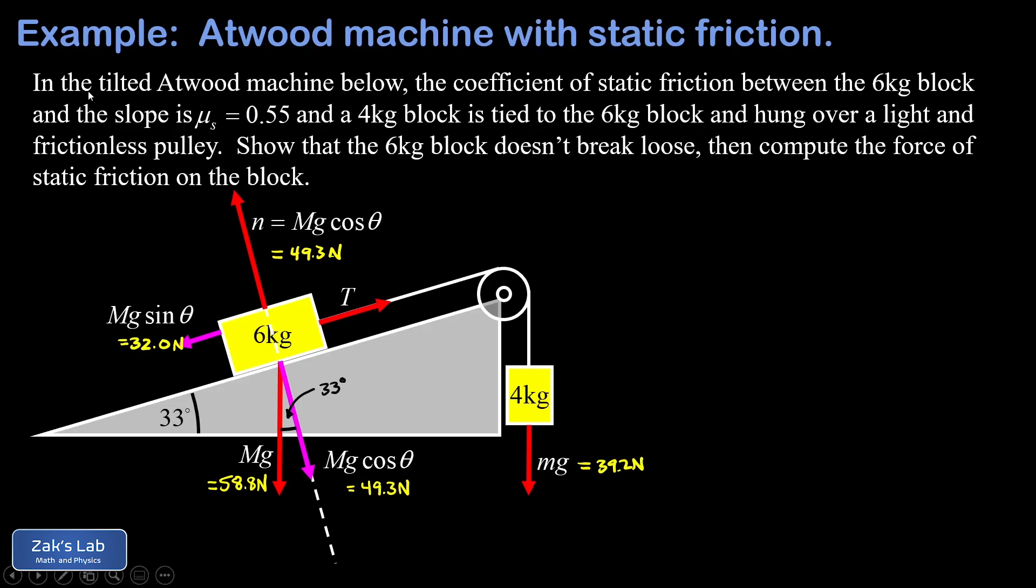And finally, we're going to get the tension pulling up on the four kilogram block. And that's the same unknown value T as the tension on the other end of the string, provided the string is light. Now we can start making progress immediately by noticing that because this system is totally stationary, the forces must be balanced on the four kilogram block. And that means the tension in the string is 39.2 newtons. That means the tension is 39.2 newtons on the other side as well.